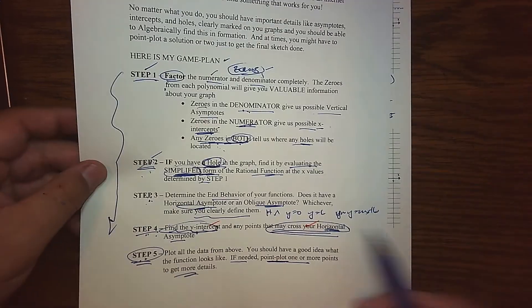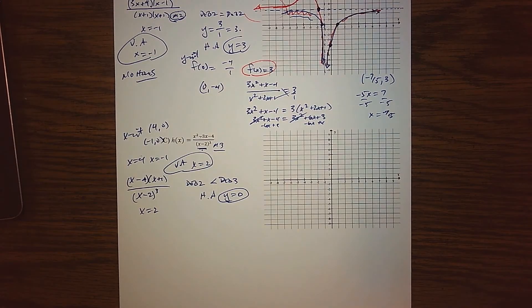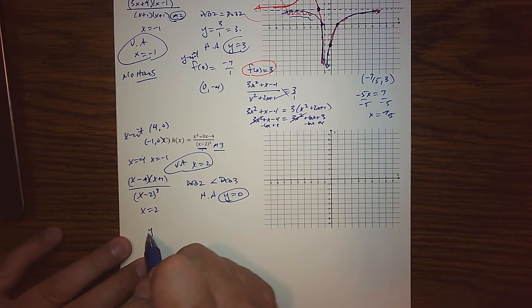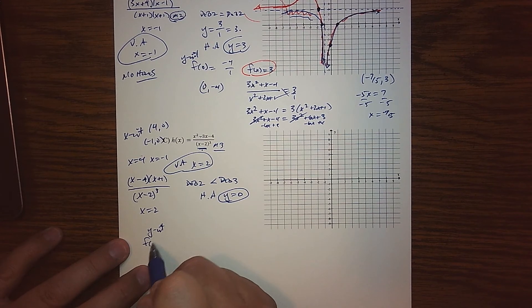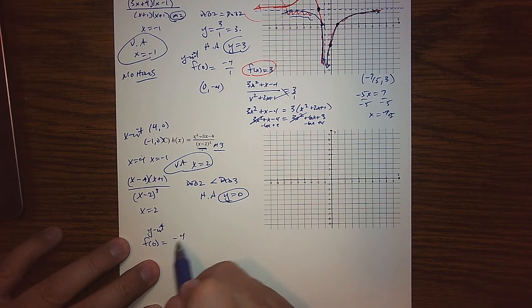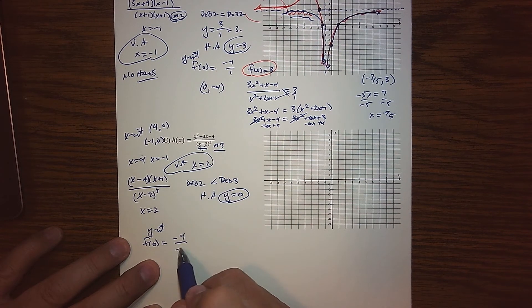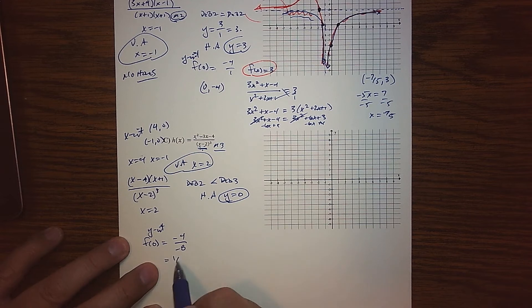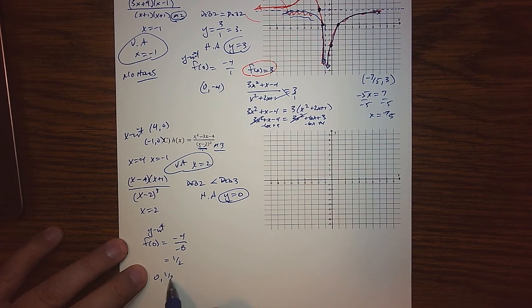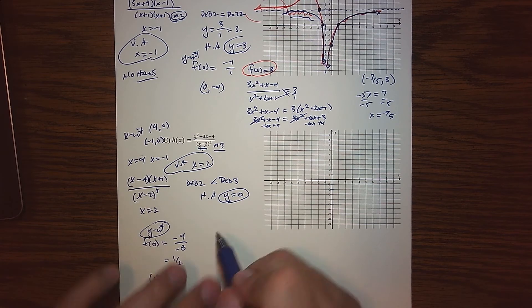Well, upstairs my degree is 2, downstairs my degree is 3. So this tells us that we have a horizontal asymptote and it's basically the x-axis, y equals to 0. So far so good. Step four: let's find the y-intercept. And I learned my lesson, we're also going to find where we cross the horizontal asymptote.